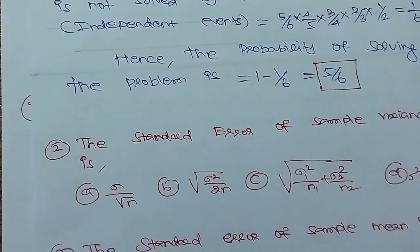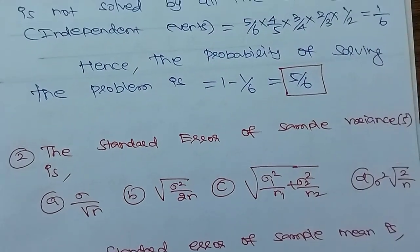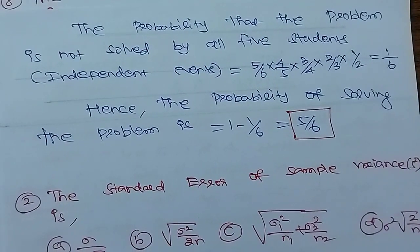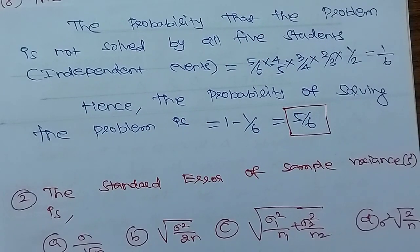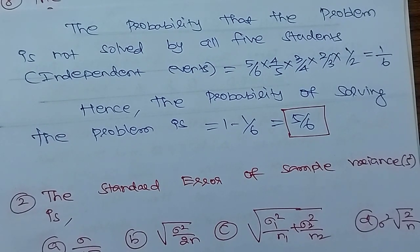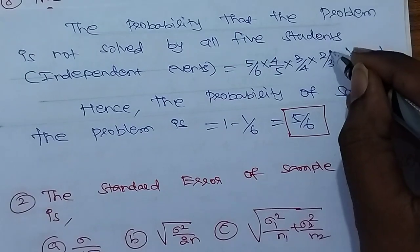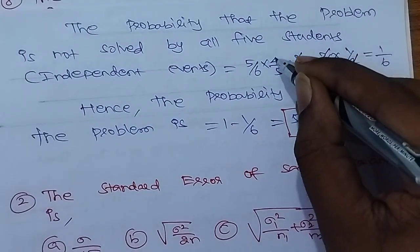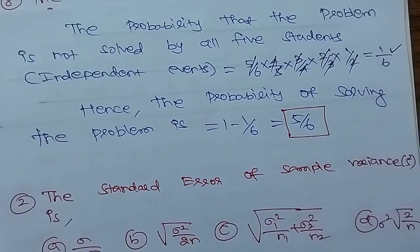The probability that the problem is not solved by all students — since these are independent events — is P(A̅)×P(B̅)×P(C̅)×P(D̅)×P(E̅) = 5/6 × 4/5 × 3/4 × 2/3 × 1/2. You will get the answer: 1/6.